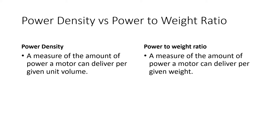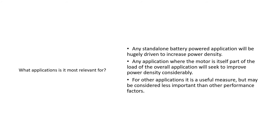Power density is a measure of the amount of power that a motor can deliver for a given unit of volume — so watts per cubic centimetre, for example. Power-to-weight is the same concept but referring to weight instead of volume: the amount of power a motor can deliver per given unit of weight.